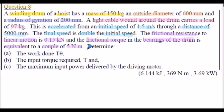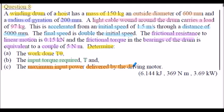We are asked to determine: part a, the work done T-theta in raising the load to the specification stated; part b, the input torque required, denoted as capital T; and part c, the maximum input power delivered by the driving motor — note this is at maximum speed. The answers to parts a, b, and c are shown in brackets. Pause the presentation, sketch the hoist configuration, and extract information from the question — be careful with units, as some will need conversions. A diagram of the hoist arrangement is shown on the following slide.